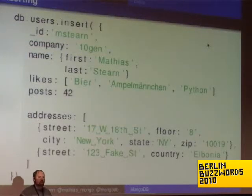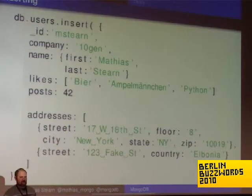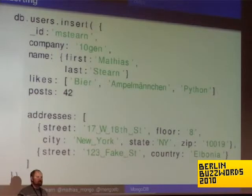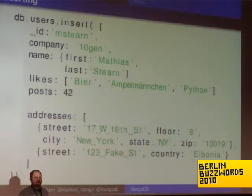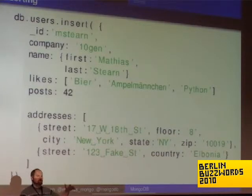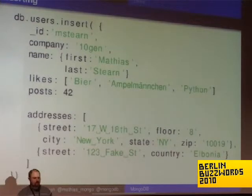Just to give you an idea of what Mongo looks like — I'm going to have a lot of code, so feel free to holler out if there's anything you don't understand. I want to give you a feel for what it's like to work with Mongo rather than just talk about it. This is the JavaScript interface, and pretty much every language — at least the dynamic languages — look very similar. You start with a DB object, which represents a specific database. Similar to a relational database, you can have multiple databases in a single installation.